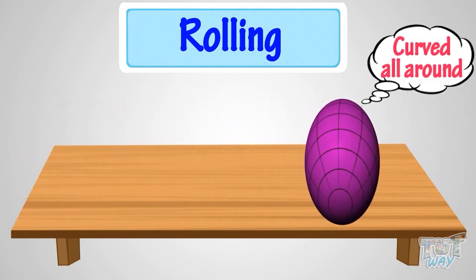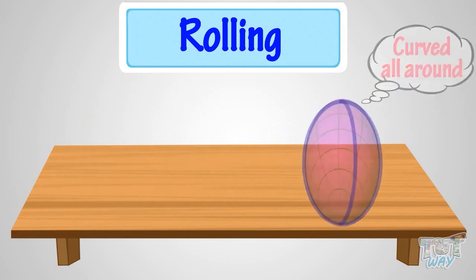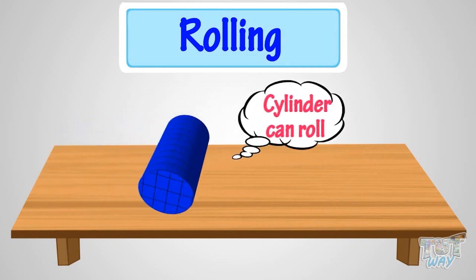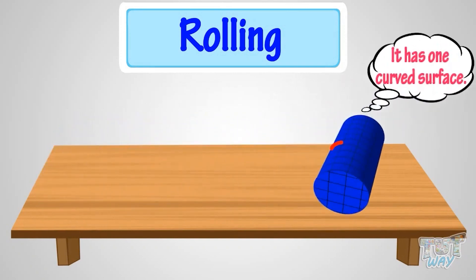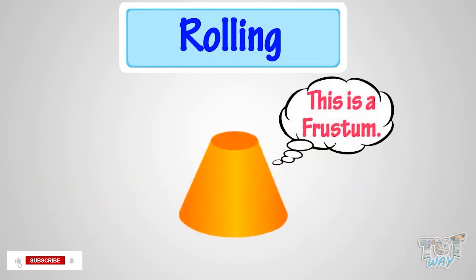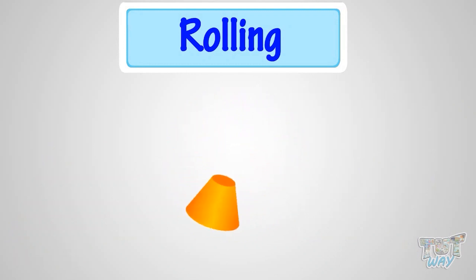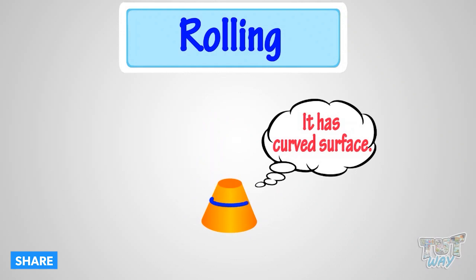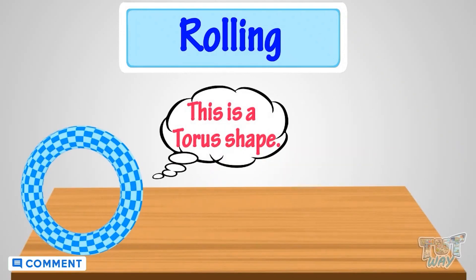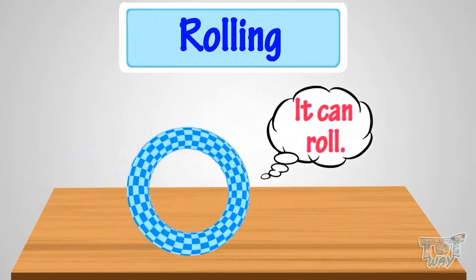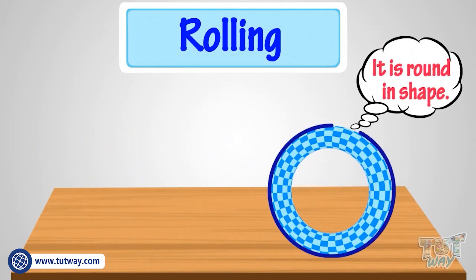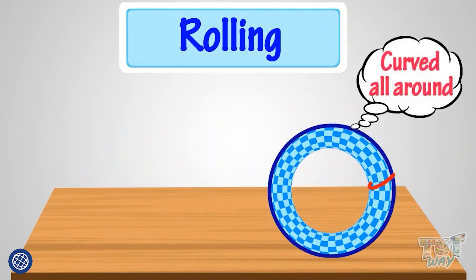A cylinder can roll as it has one curved surface. This is a frustum — it can roll too, as it has a curved surface. This is a torus shape — it can roll as it is round in shape and is curved all around.